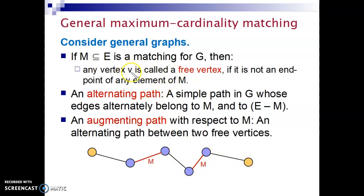Going back to the definition of a free vertex. Any vertex is a free vertex if it is not an endpoint of an element of the matching. So this vertex, this vertex here, this one here, and this one here. All vertices shown in blue are endpoints of matching. So our free vertices are the ones marked with yellow. This vertex is a free vertex. This vertex is a free vertex.